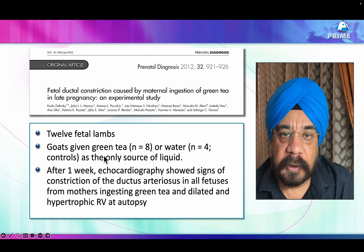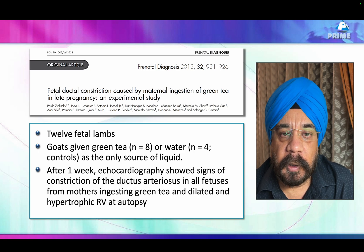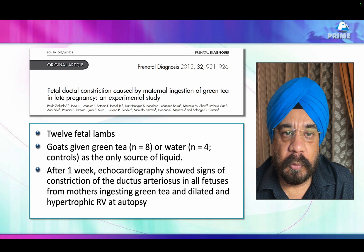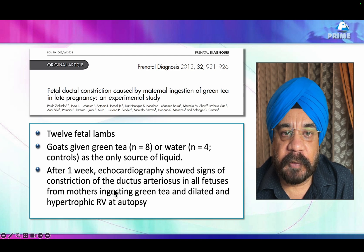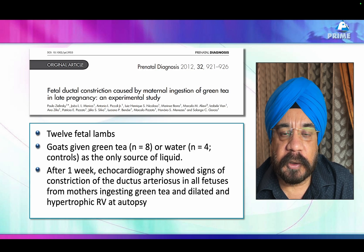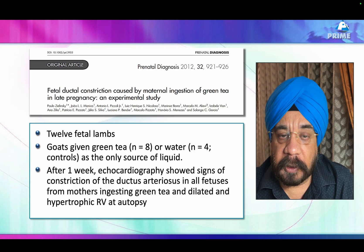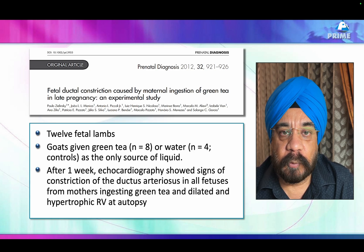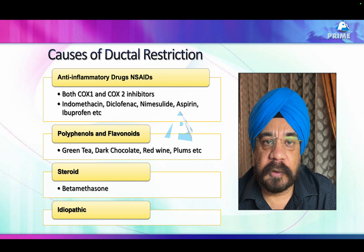The same author conducted a study giving green tea as the only source of water to goats. After the goats consumed green tea exclusively, they were sacrificed and the fetuses examined — all showed features of ductal restriction. This confirms that food substances can produce ductal restriction.